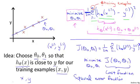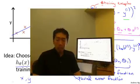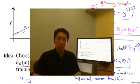So far we've just seen a mathematical definition of this cost function. And in case this function j of theta 0 theta 1 seems a little bit abstract and you still don't have a good sense of what it's doing. In the next video, in the next couple of videos, I'm actually going to go a little bit deeper into what the cost function j is doing and try to give you better intuition about what it's computing and why we want to use it.